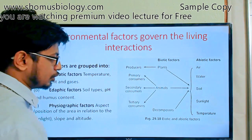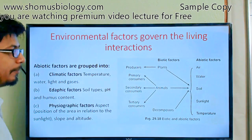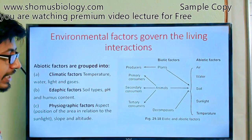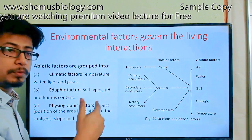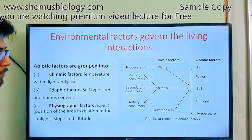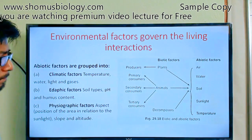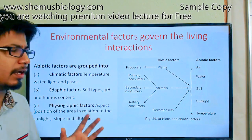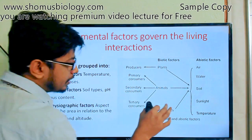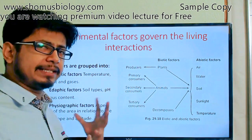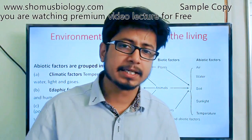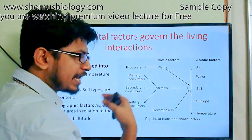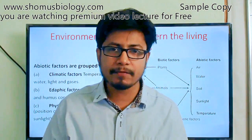Animals can be classified as primary consumers (eat producers directly), secondary consumers (eat primary consumers), and tertiary consumers (eat secondary consumers). Decomposers, the third category of biotic factors, take materials from dead animals and plants and transfer them back to the environment.